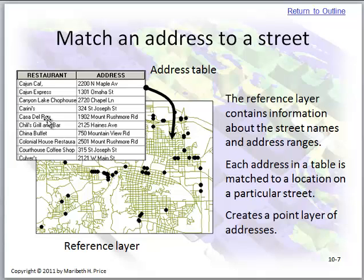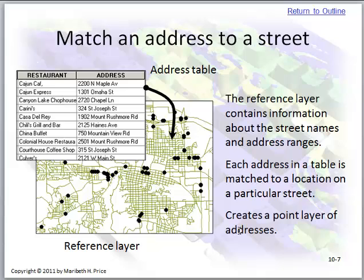In this example we have a list of restaurants and their addresses. The reference layer shown at the bottom is how the addresses get matched. Each address in the table is matched to a location on a particular street, and it creates a point layer of addresses. So essentially it's an easy way to get a list of addresses into ArcGIS.